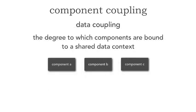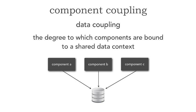The last and probably loosest form of coupling is data coupling. This is the degree to which components or services are bound to a shared data context. Components A, B, and C know nothing about each other — they don't even know each other exists — but they're all bound to a shared data context, whether that be a database or a file. If I change the format of that file, a table schema in a relational database, or even the type of data I'm sending, I could impact B and C and not even know it. And so that's another form of coupling.